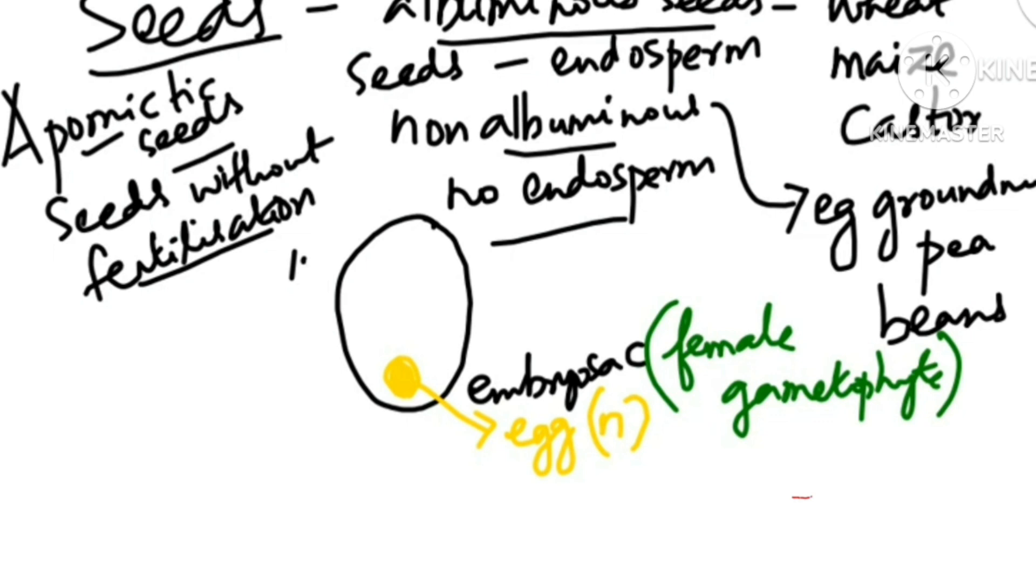After that only seed is formed. So whatever ovule is surrounding here, the ovule part, they will become a seed. This is what happens usually. But in apomictic seeds, what happens is the egg becomes diploid on its own.